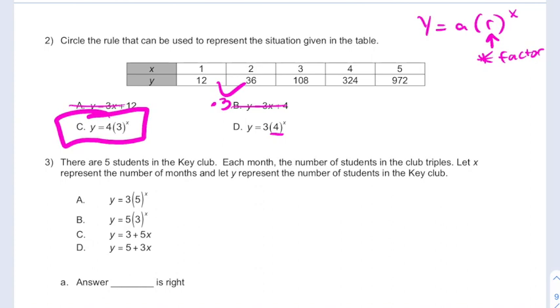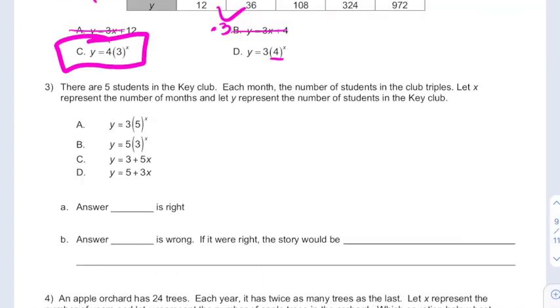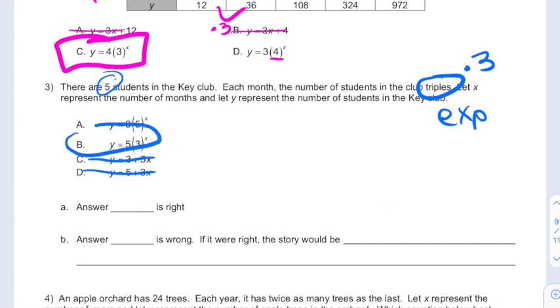In this next problem, we're told that we start with five students, and each month the number triples. This means we're always multiplying by three. That means we're exponential again, so we can rule out the linear options. If we start at five, and the multiplication factor is three, we should see five on the outside and three on the inside of the parentheses, so this must be b. So we say answer b is right.